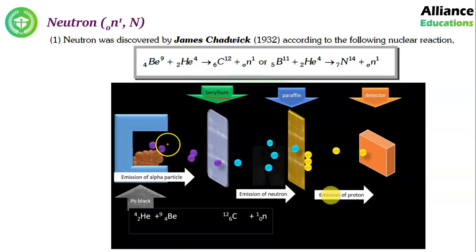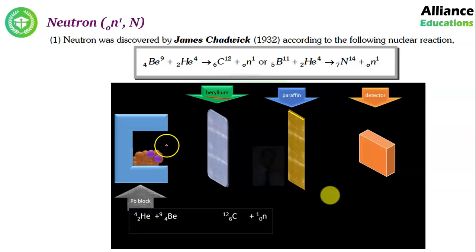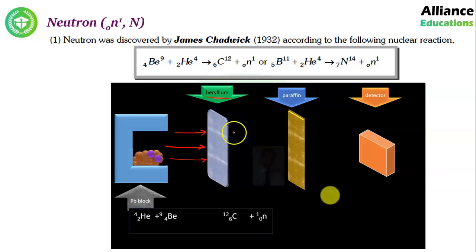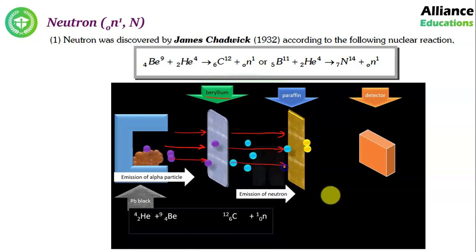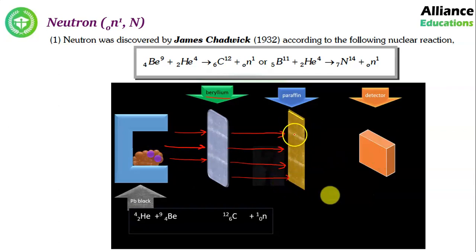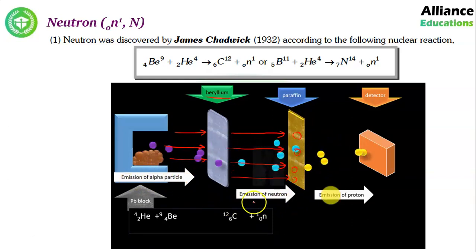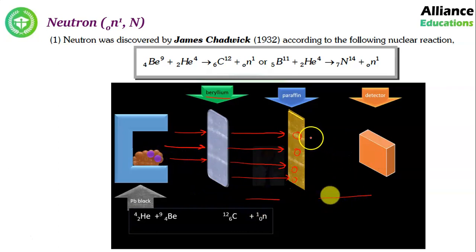So it was observed that radioactive material emits alpha particles, which hit beryllium and cause a neutral particle (neutron) to be emitted. These neutrons hit the paraffin wax sheet, and when neutral particles strike the paraffin sheet, protons are ejected from it. So there is emission of alpha particle, then emission of neutron, then emission of proton — and the detector detects those protons.